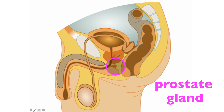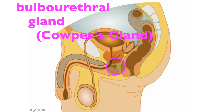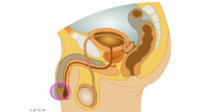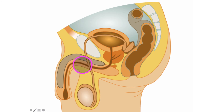This right here is the bulbourethral gland, otherwise known as Cowper's gland. It provides the pre-seminal fluid that helps to lubricate the tip of the penis, and it also neutralizes the pH of the urethra.